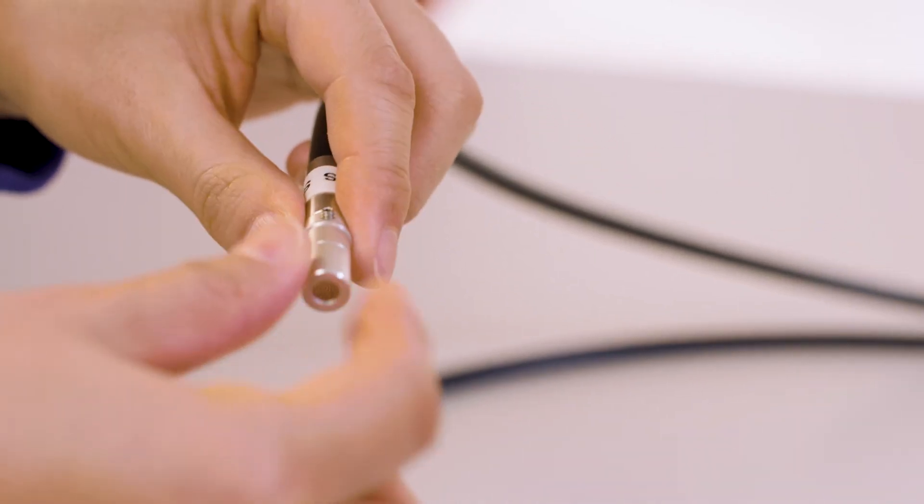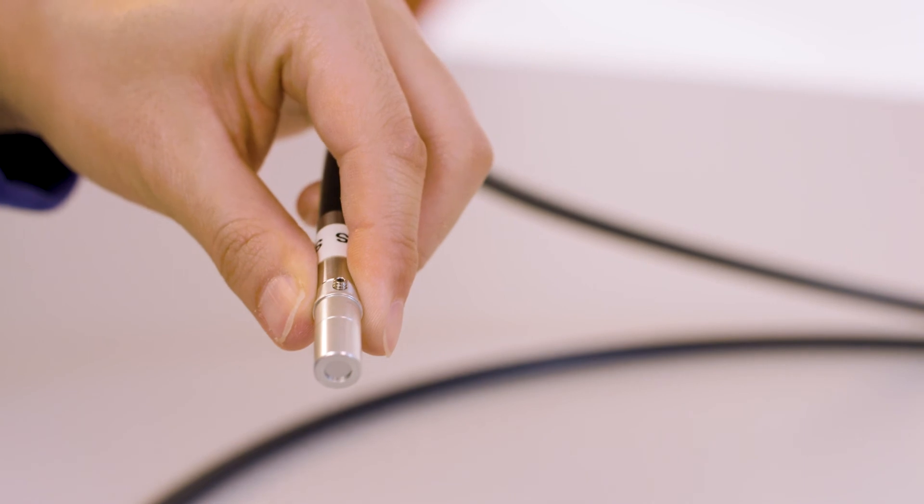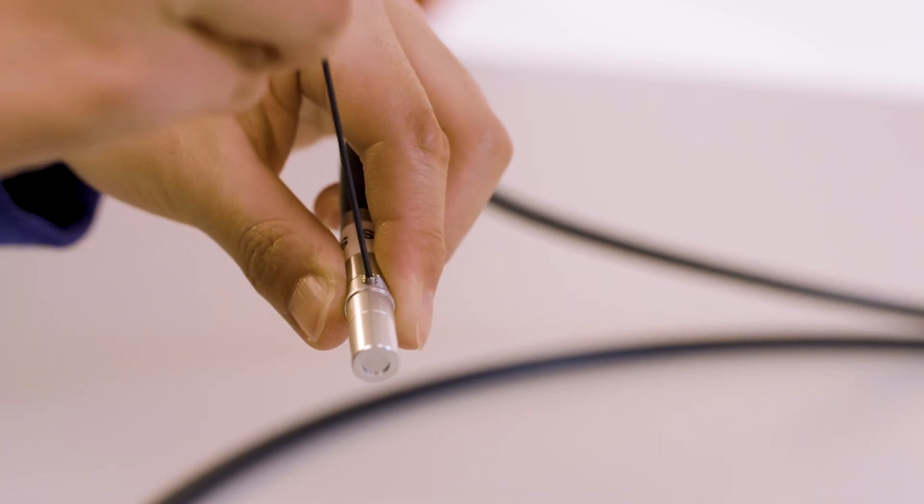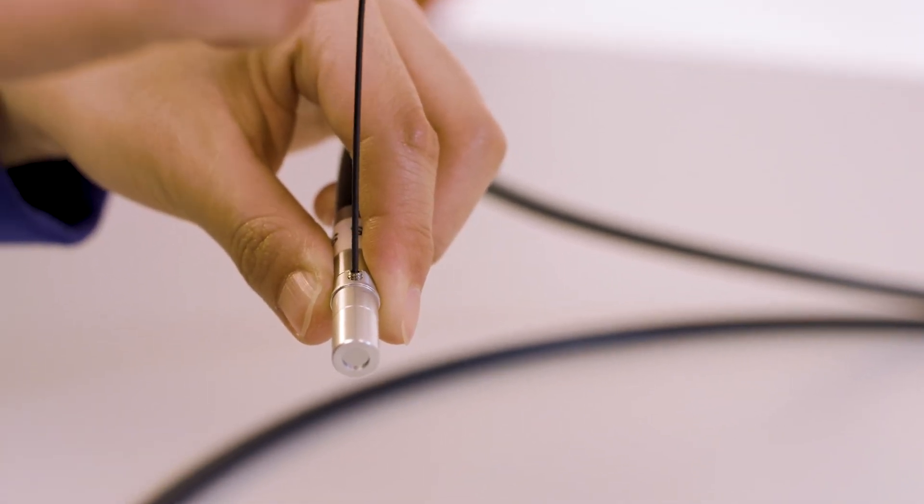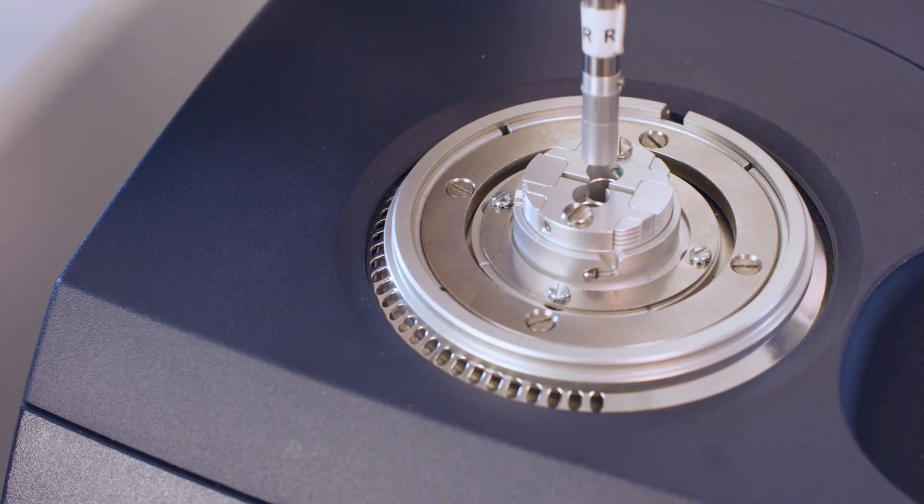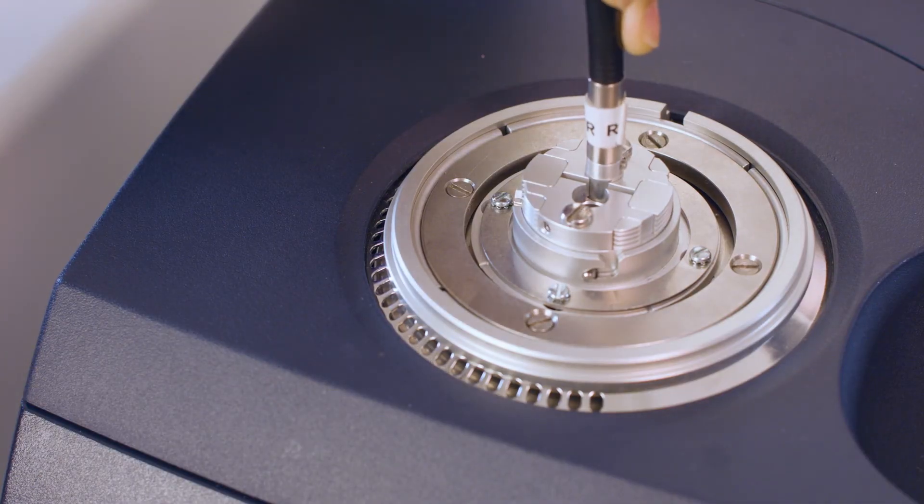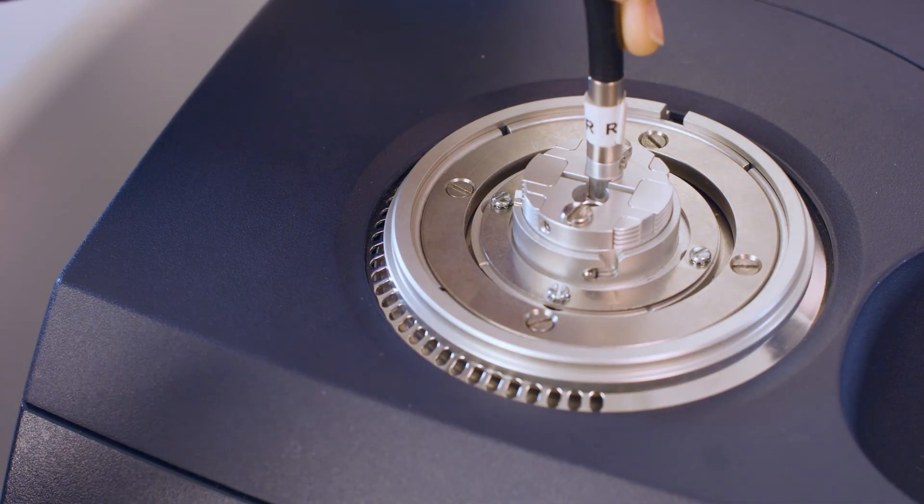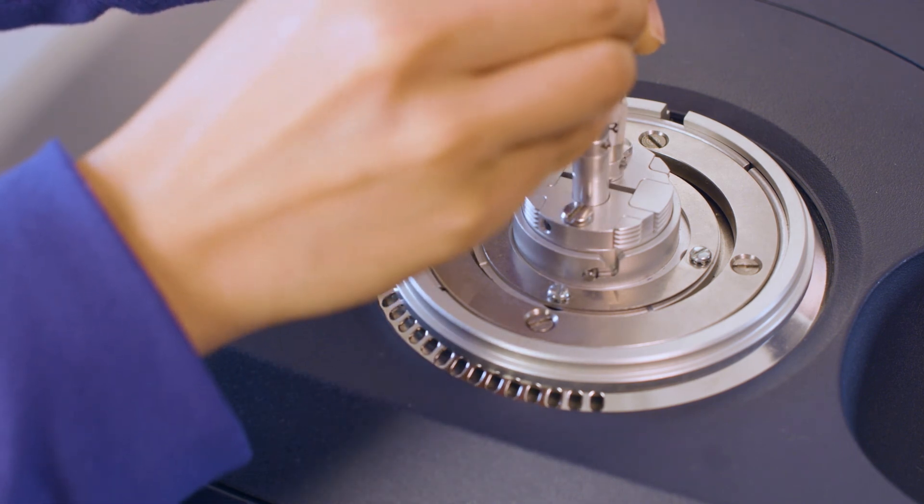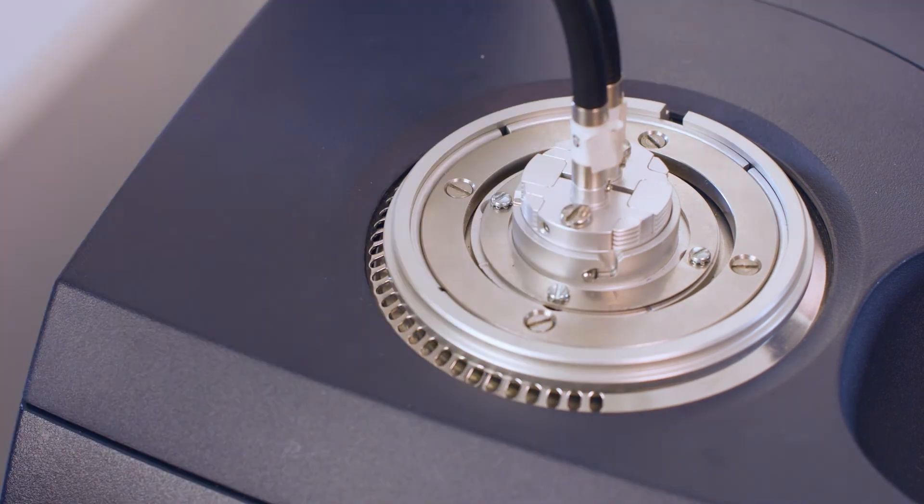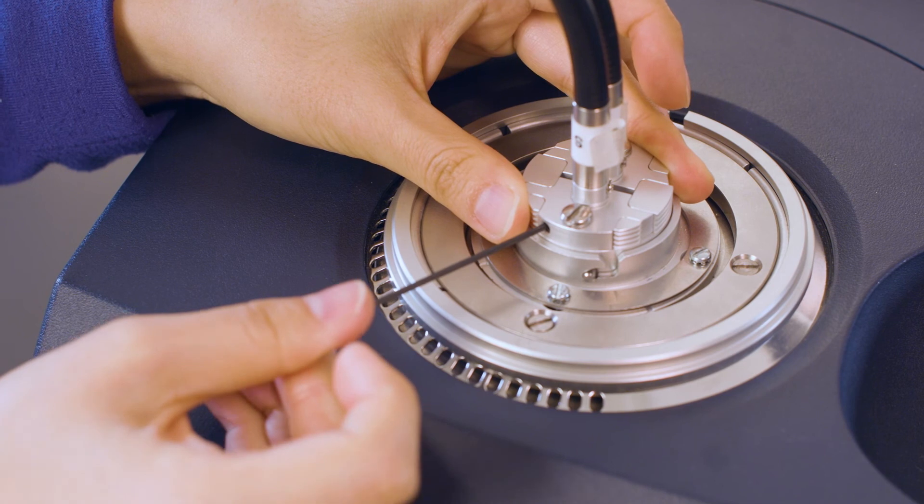Mount the filter holder to the end of the light guide arm. Tighten the set screws to keep them in place. Insert the light guide arms into the reference and sample holes in the light guide adapter until they bottom out. Tighten the set screws to hold them in place.